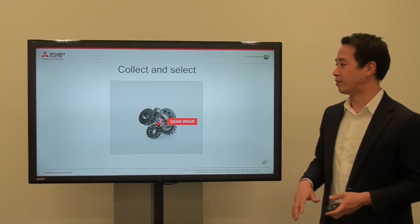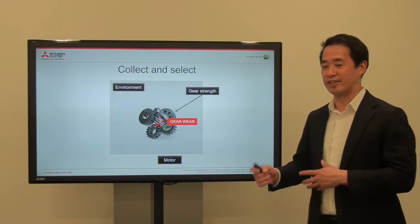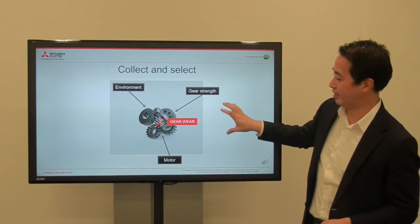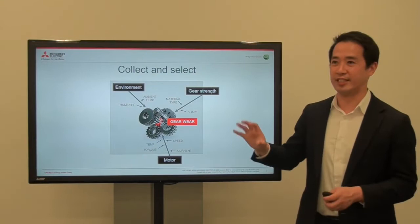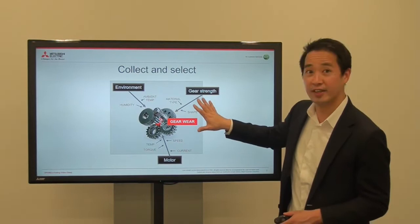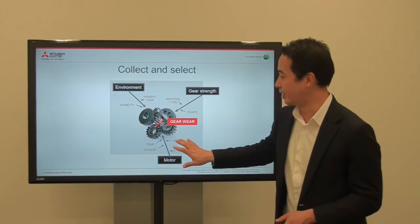The first step is to collect and select the data you have. We don't know the gear wear status directly, but we know a lot of different data. We know the environment data, we know the gear strength data, and we know the electrical characteristics of the motor. We know even more detail: the humidity, the ambient temperature, the material type, the shape of the gear, and also lots of data surrounding the motor — the current, the speed, and the temperature.